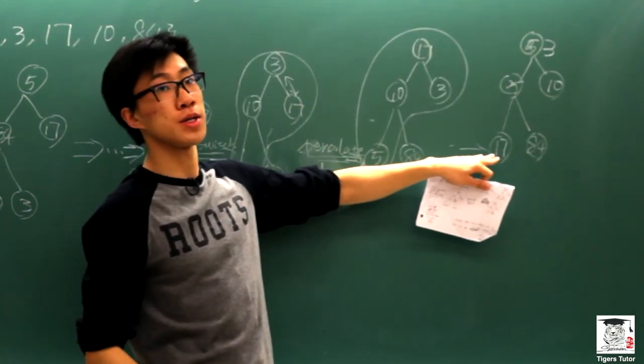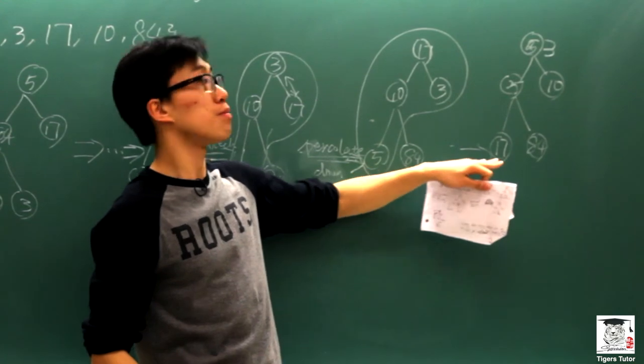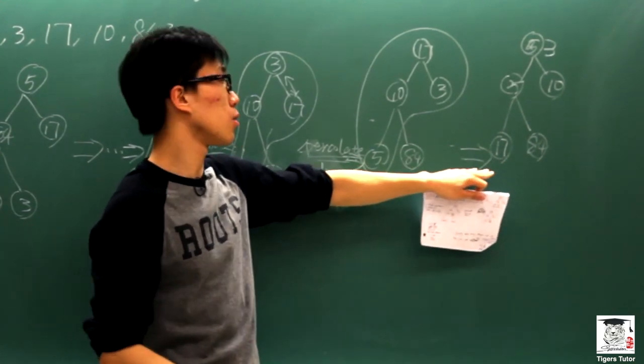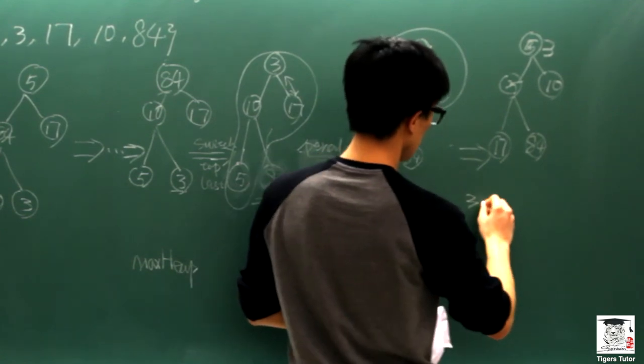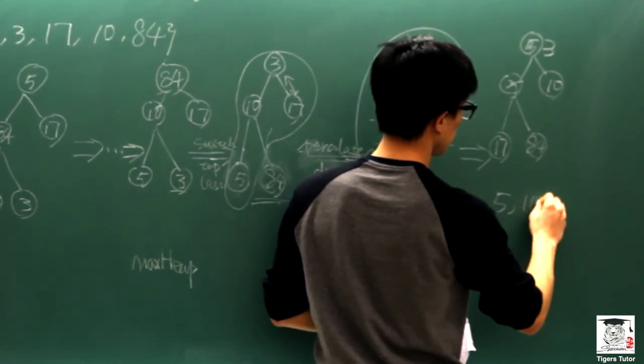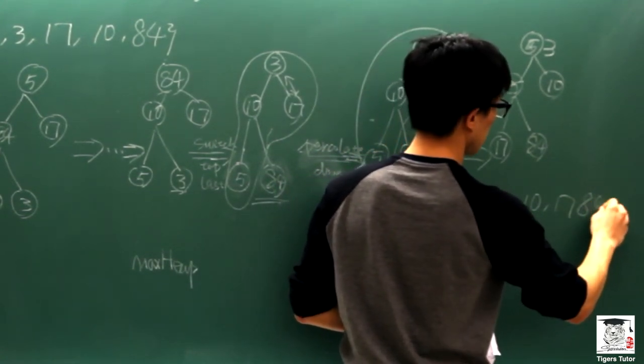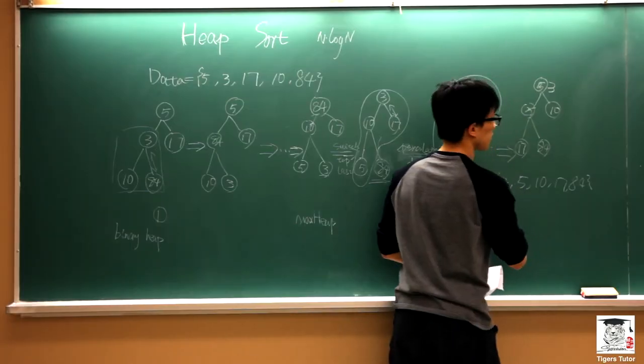Then we switch our perspective from the binary heap back into the array. Then we will have the array already sorted, which is 3, 5, 10, 17, and 84 in ascending order.